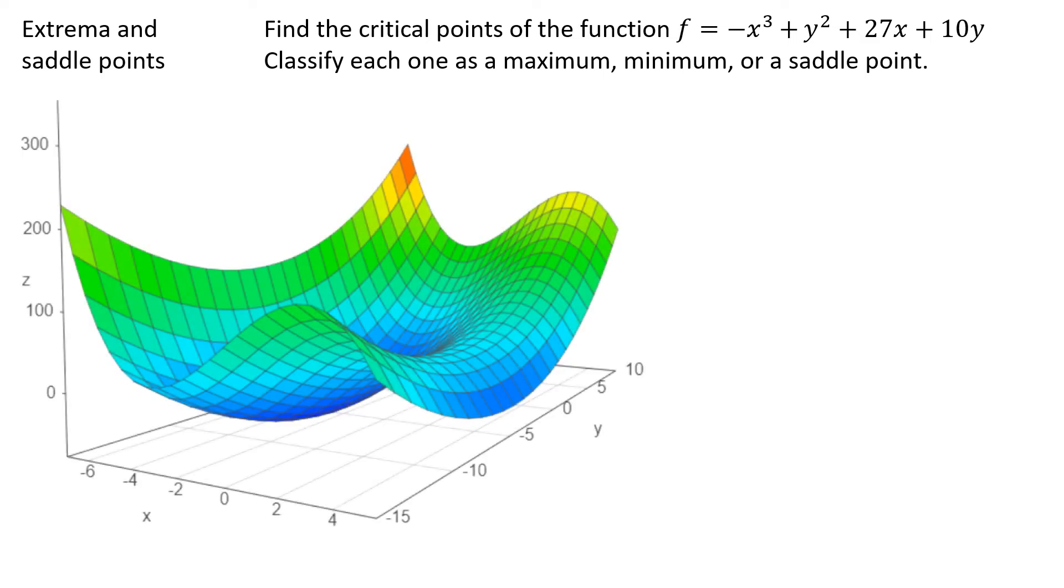When graphing using computer software, this surface looks like this. One thing you may notice here is that there appears to be a minimum point somewhere in this region. There also appears to be what we call a saddle point here.